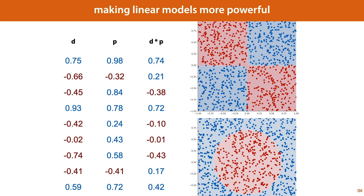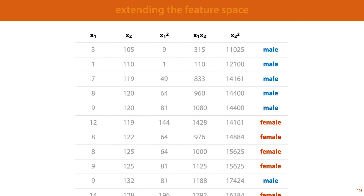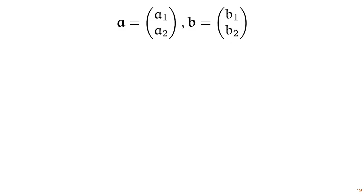The kernel trick allows us to have our cake and eat it too. To illustrate, let's look at a very simple example. The simplest way we saw to extend the feature space was to add all cross products. This turns a 2D data set into a 5D data set because we've added the features x1 squared, x1 times x2, and x2 squared. Now imagine we have two vectors, and instead of computing their dot product, we computed the square of their dot product. Turns out that this is equal to the dot product of two other 3D vectors, and we can work this out by simple rewriting.